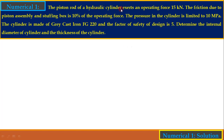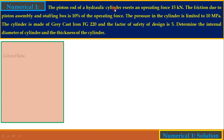Let us solve the first problem. The piston rod of a hydraulic cylinder exerts an operating force of 15 kN. The friction due to piston assembly and stuffing box is 10% of this operating force. The pressure inside the cylinder is 10 MPa. The cylinder is made of gray cast iron FG200. The factor of safety is 5. Determine the internal diameter and thickness of the cylinder. This is a hydraulic cylinder, so we consider it as a thick cylinder.